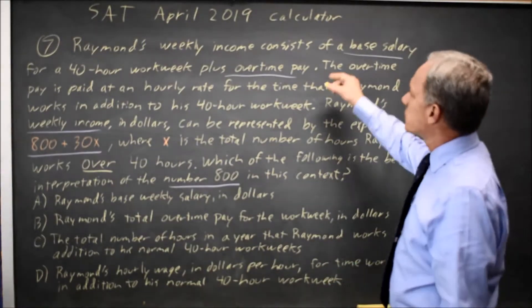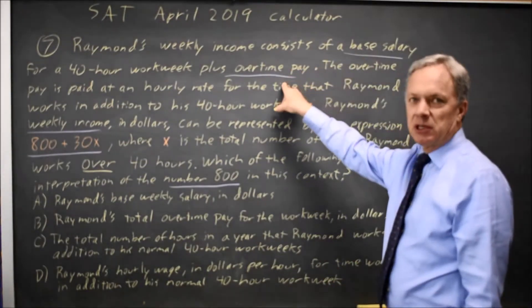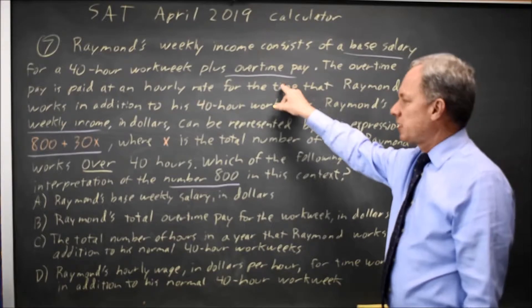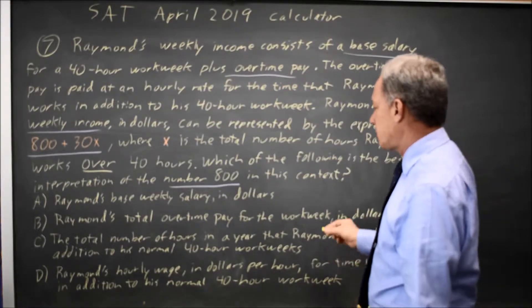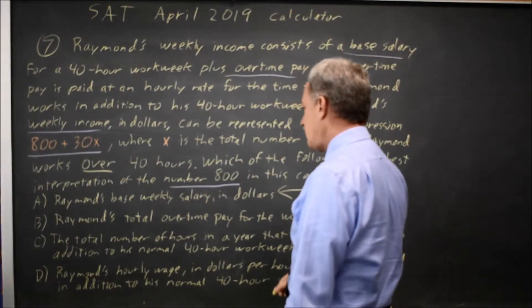Since the weekly income is a base salary plus overtime, when overtime is 0, the 800 is his base salary, which is choice A.